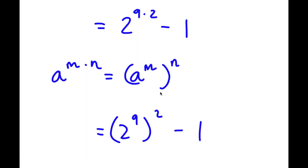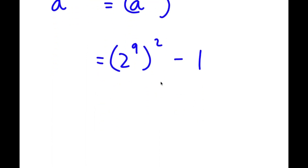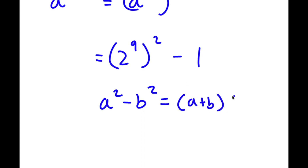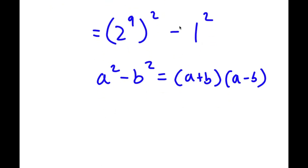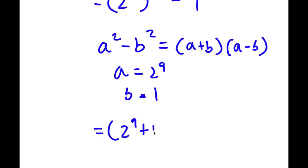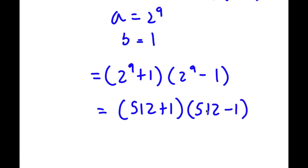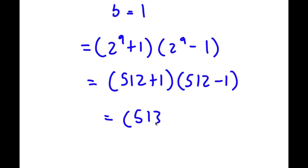If I have something in the form a squared minus b squared, this is equal to a plus b times a minus b. So in this case, we can think of 1 as 1 squared. Now that we have 2 to the power of 9 squared minus 1 squared, we can think of a as 2 to the power of 9 and b as 1. So now I have 2 to the power of 9 plus 1 times 2 to the power of 9 minus 1. Now 2 to the power of 9 is simply equal to 512, so I have 512 plus 1 times 512 minus 1, which is 513 times 511.